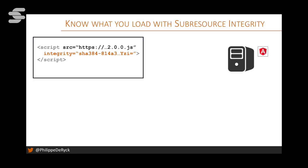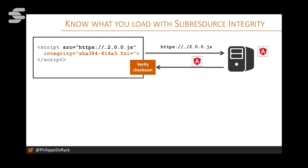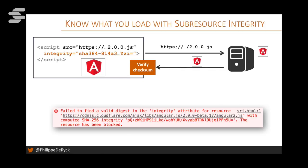With the SRI 'integrity' attribute, when the browser loads the library it verifies the checksum. If it matches, you get your Angular library. If it doesn't match, you get an error saying the loaded file doesn't match what you expected. The browser protects you from loading a modified file. Of course this doesn't mean the file is malicious — it simply means it's been modified and no longer matches the checksum. You can catch this error and try another source, or even host a copy of the file yourself as a fallback.